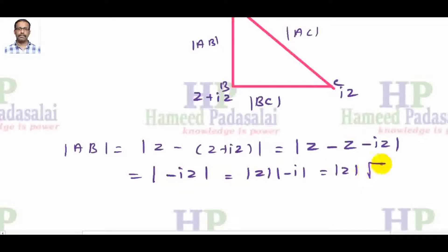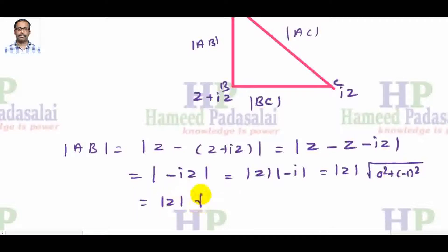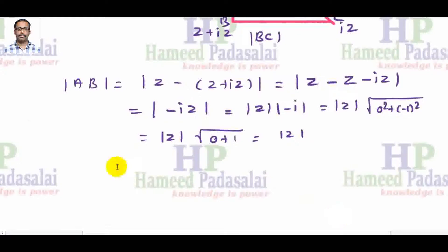We compute modulus Z as the square root of the real part squared plus the imaginary part squared, which gives square root of 0 squared plus (−1) squared, equal to square root of 0 + 1, so modulus Z equals |z|.